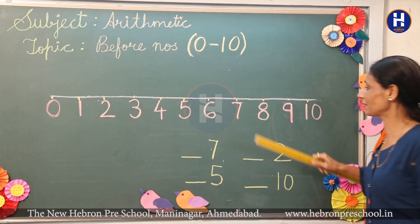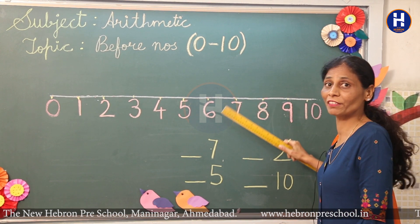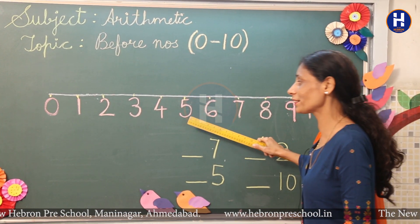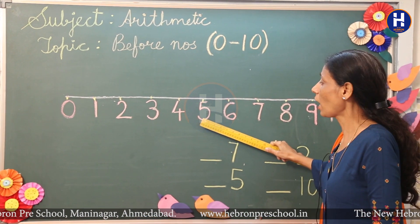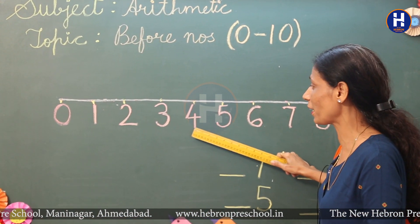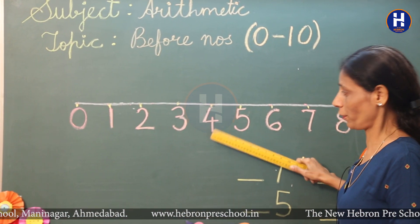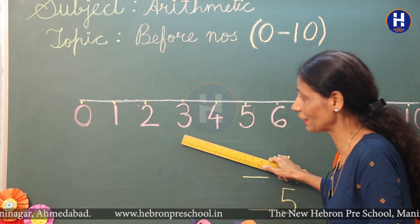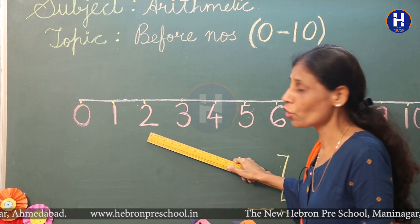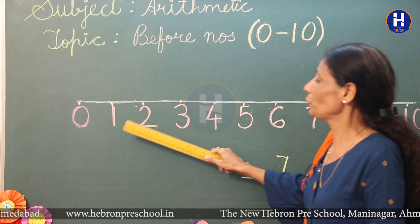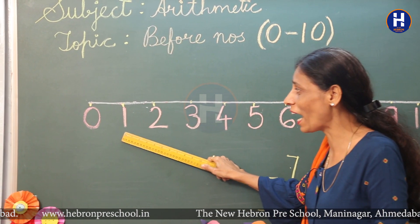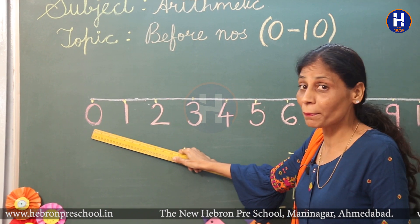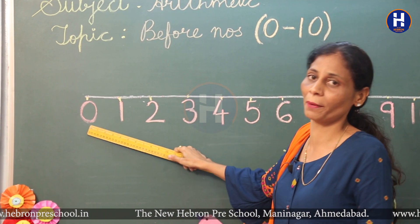Before eight? Seven. Before seven? Six. Before six? Five. Five ke pehle? Four. Four ke before? Three. Three ke before? Two. Two ke before? One. Aur one ke pehle? Yes, zero!